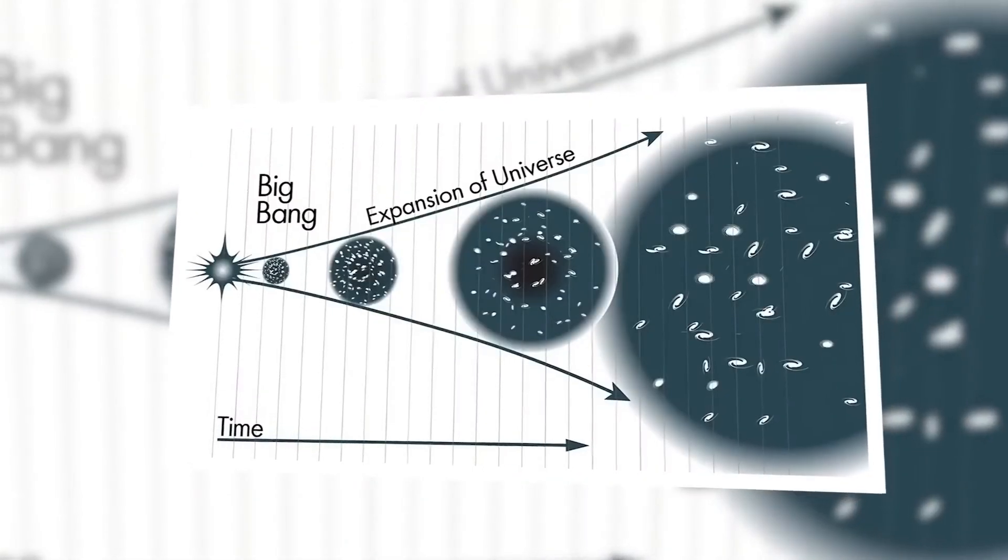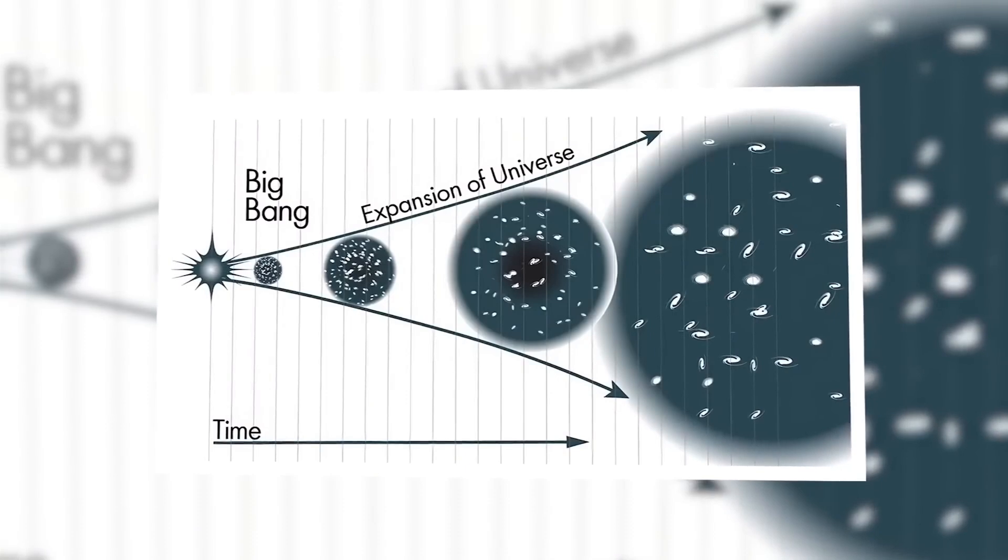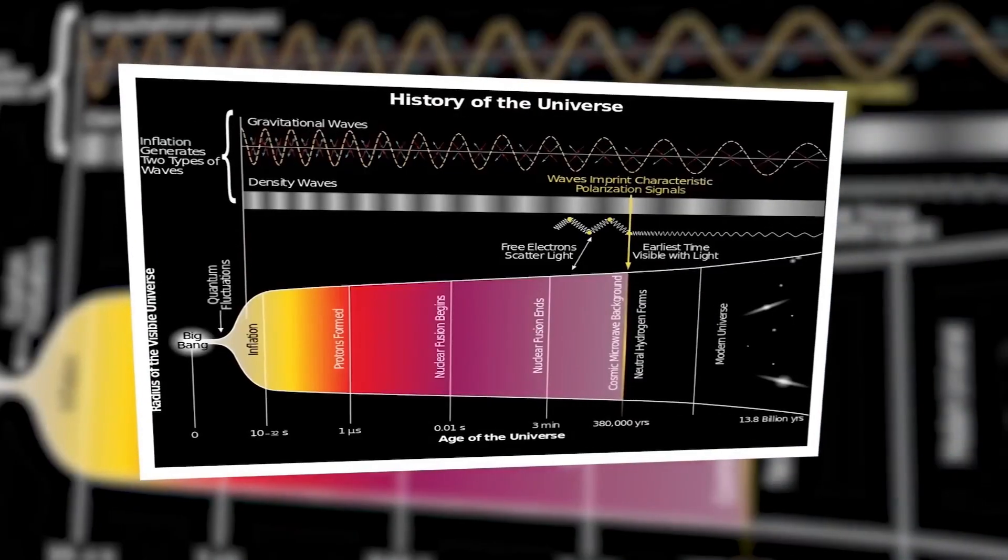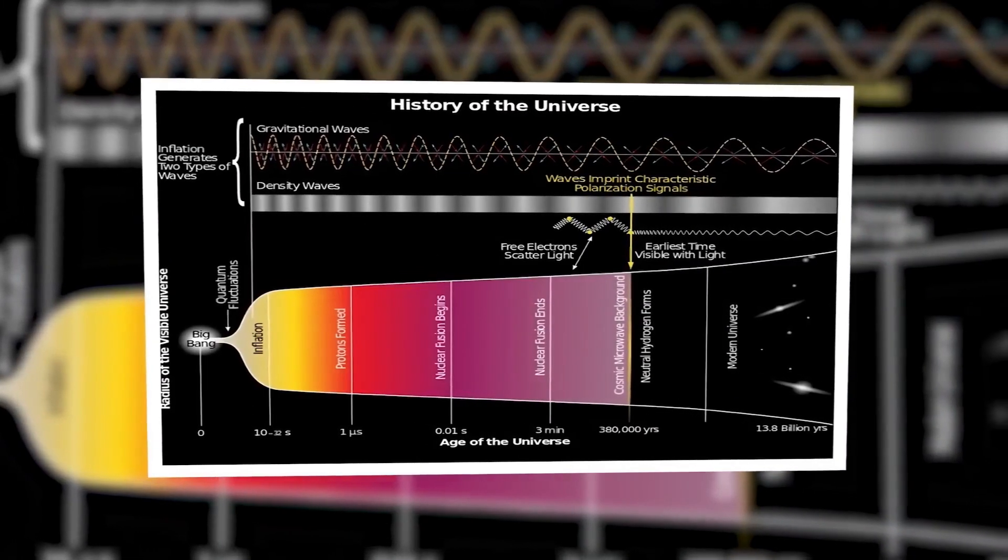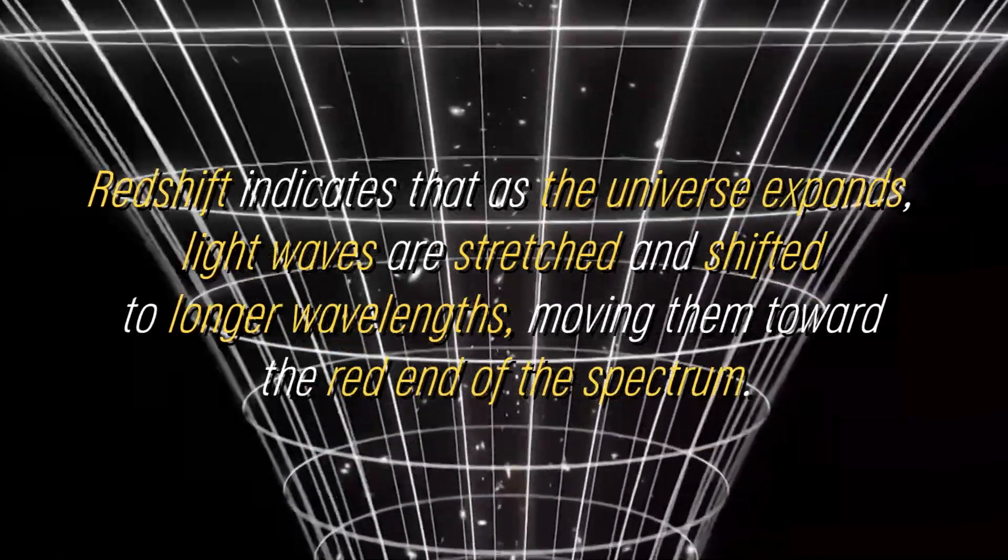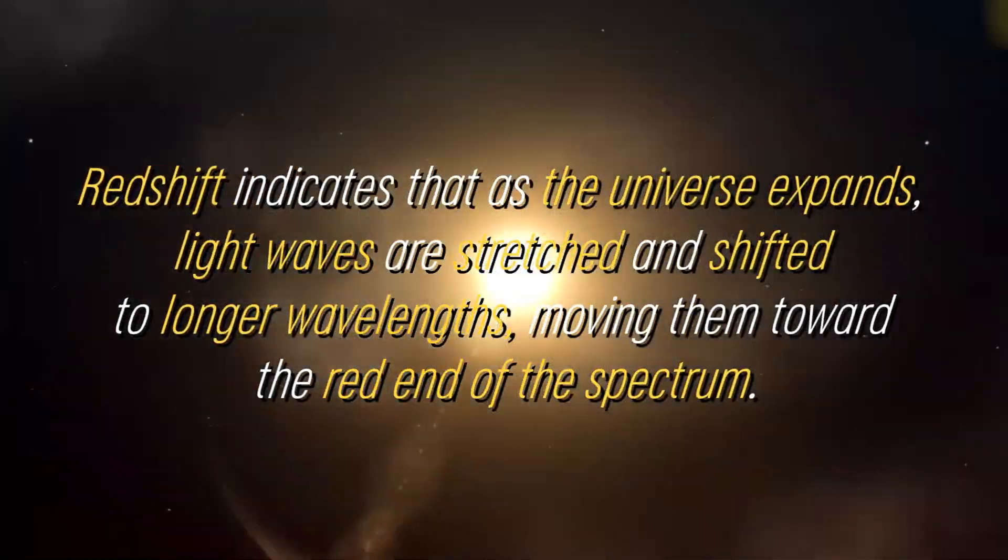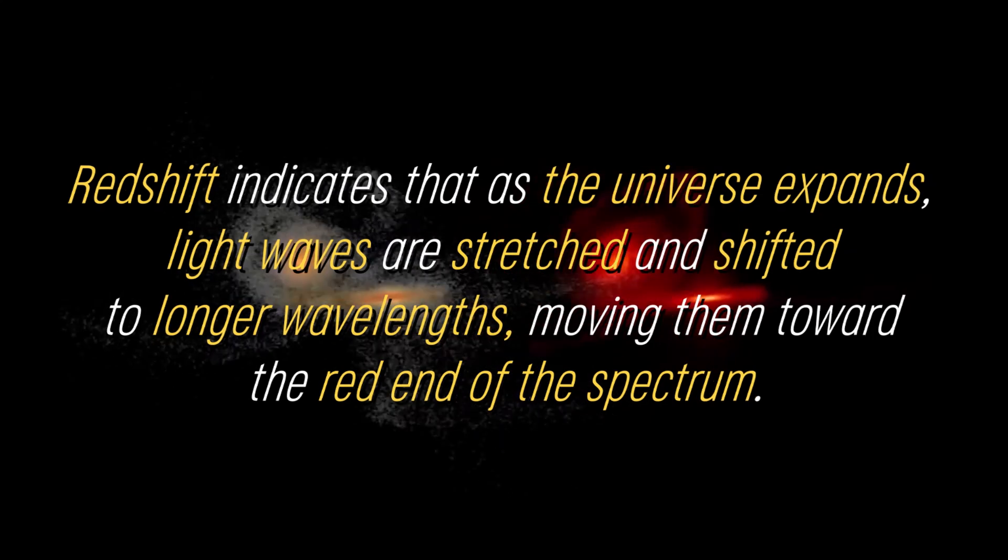Scientists have observed the effects of this expansion through various observations, such as the redshift of light from distant galaxies. Redshift indicates that as the universe expands, light waves are stretched and shifted to longer wavelengths, moving them toward the red end of the spectrum.